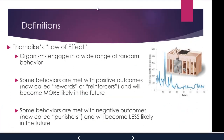This began with Thorndike and his puzzle box, where he would put cats in a box and observe their escape. Based on his observations, he developed Thorndike's law of effect. It says organisms engage in a wide range of random behavior. Some behaviors are met with positive outcomes — we now call these reinforcers — and will become more likely in the future. Some behaviors are met with negative outcomes — we now call these punishers — and the behavior will become less likely in the future.